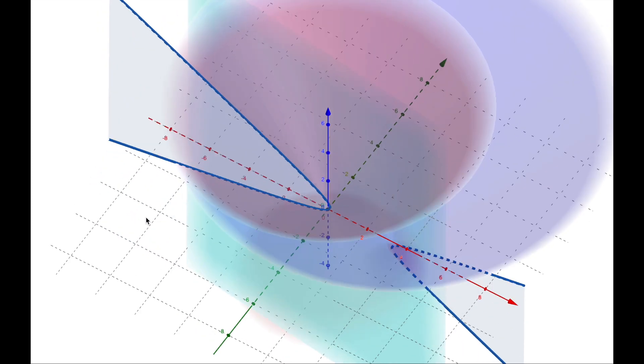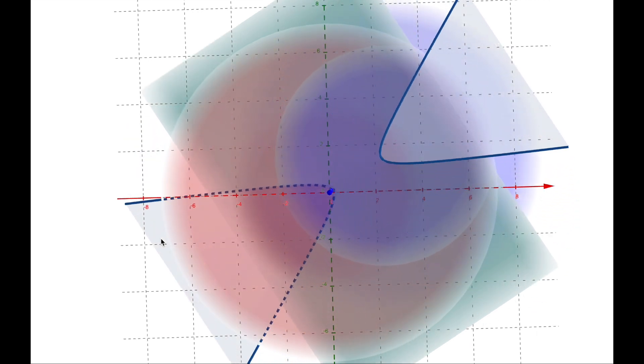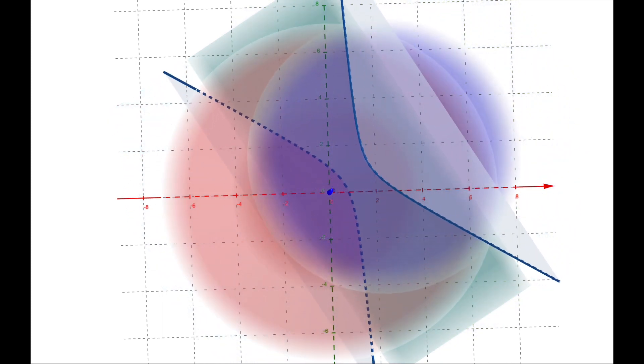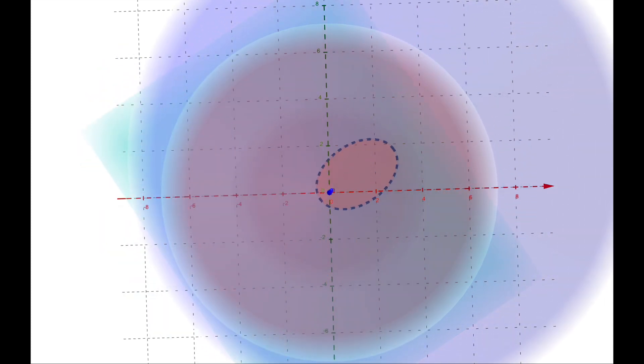When we project this intersection down onto the XY plane, the conic sections may get distorted, but they remain conic sections. This is due to a beautiful theorem in projective geometry. Conic sections get transformed to other conic sections by projections.